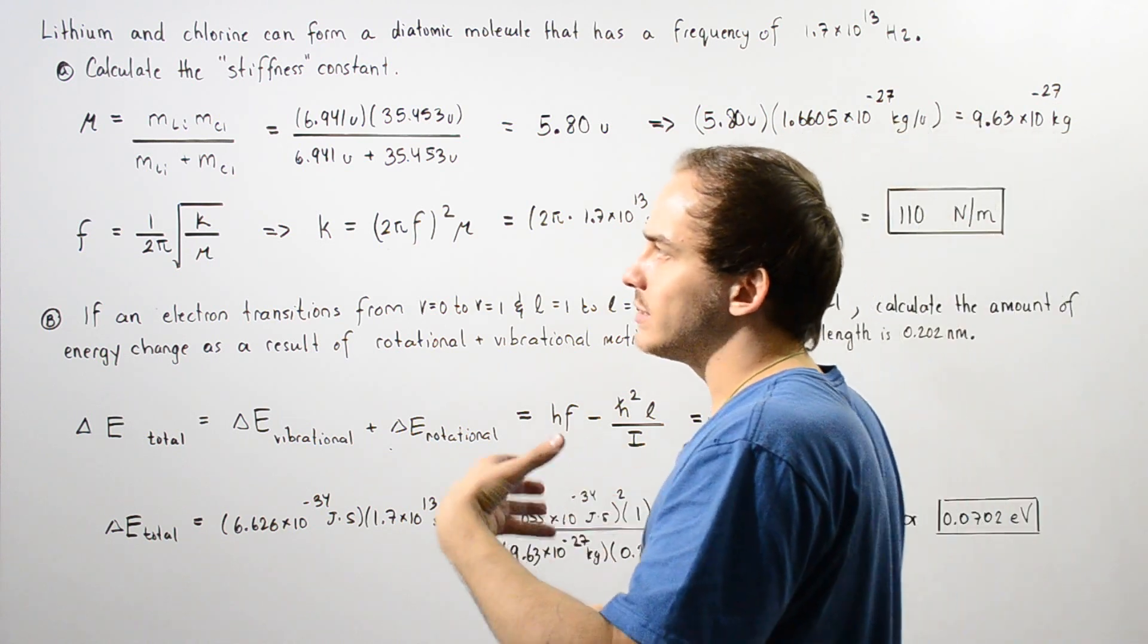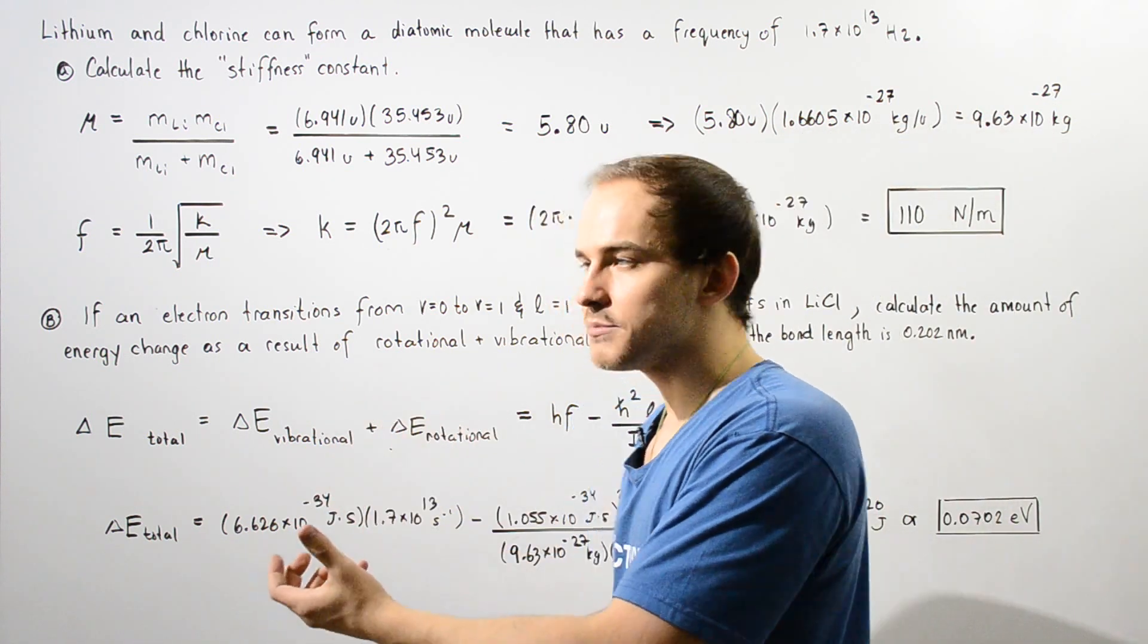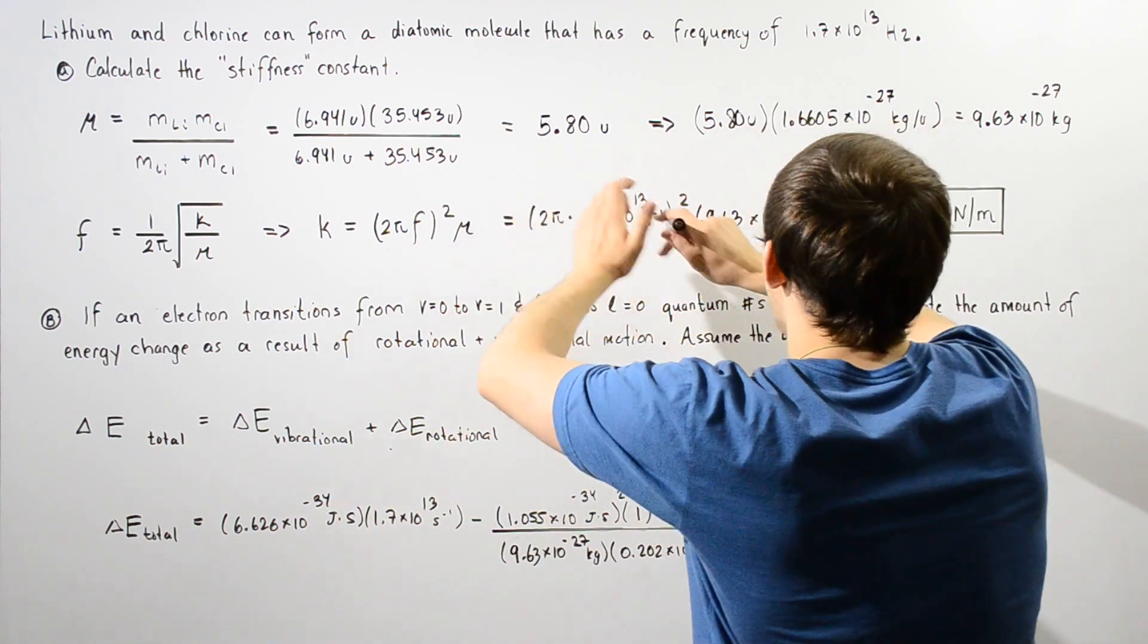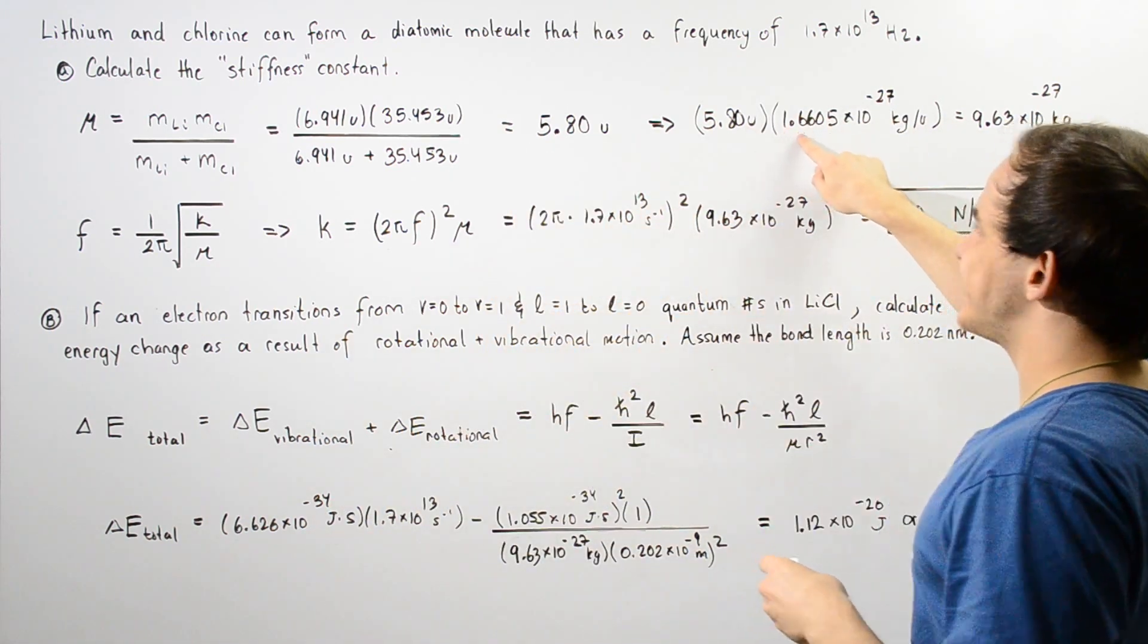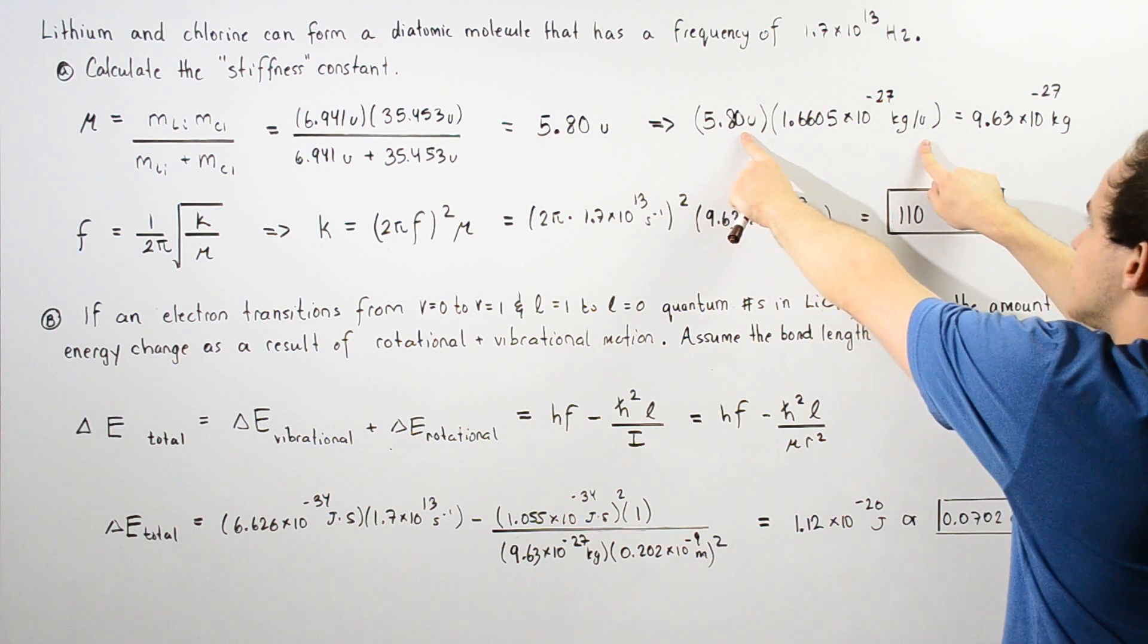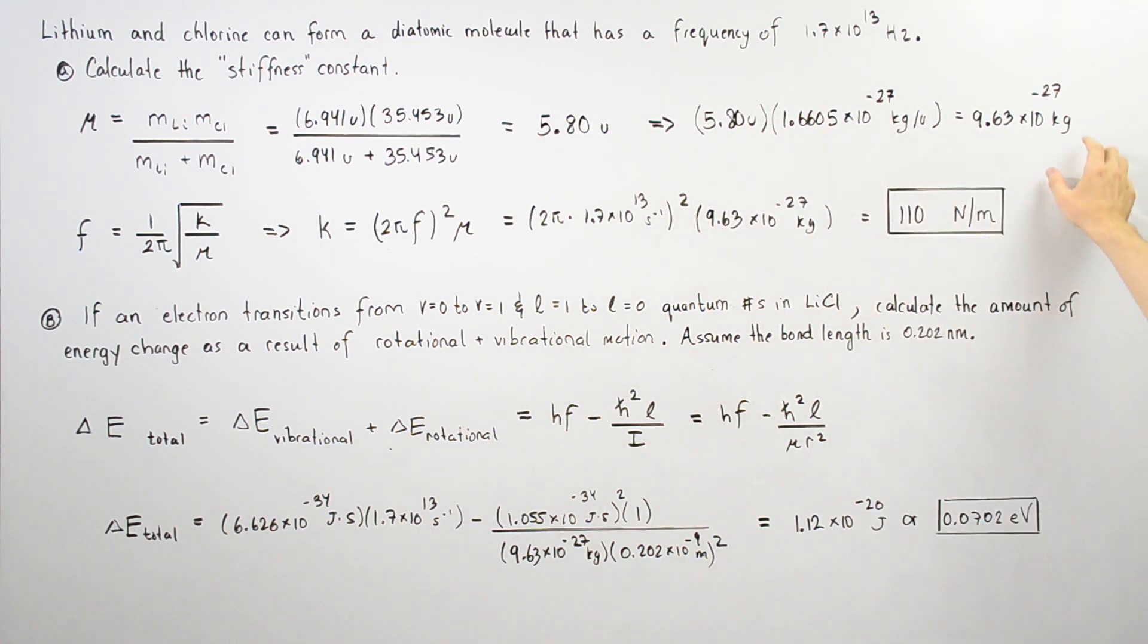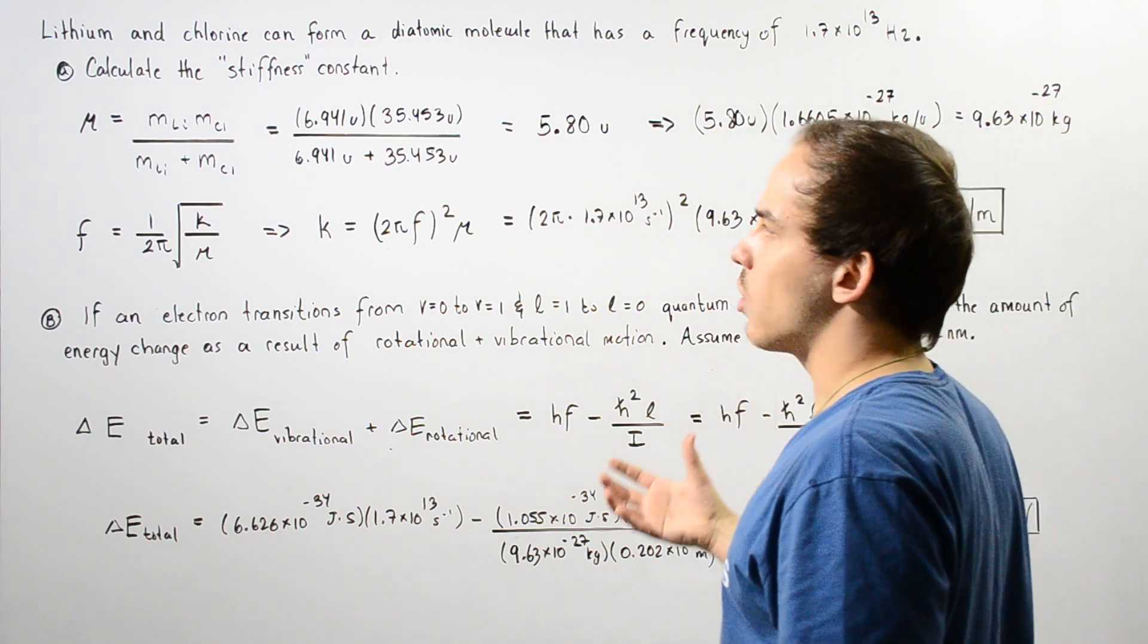Because we want to convert from unified atomic mass units to kilograms, we multiply this by our conversion factor, 1.6605 times 10 to the negative 27 kilograms per unified atomic mass unit. The units cancel and we're left with this quantity. This is the reduced mass of our lithium chloride molecule.